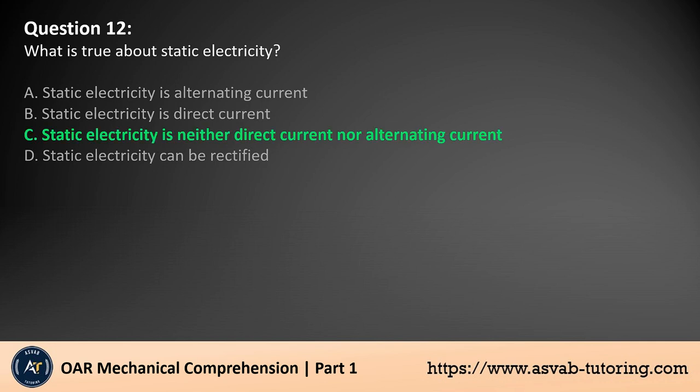The answer is C. Static electricity refers to the buildup of electric charge on the surface of objects, which remain stationary until discharged. It is not a form of current electricity like DC or AC. DC (direct current) and AC (alternating current) involve the flow of electric charge through a conductor, whereas static electricity involves static, non-moving charges. Static electricity can be discharged suddenly, but it does not involve a continuous flow of current.